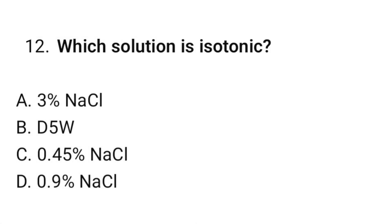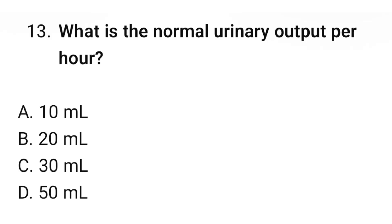Question number 12: Which solution is isotonic? The correct option is D: 0.9% NaCl. Question number 13: What is the normal urinary output per hour? The correct option is C: 30 mL.